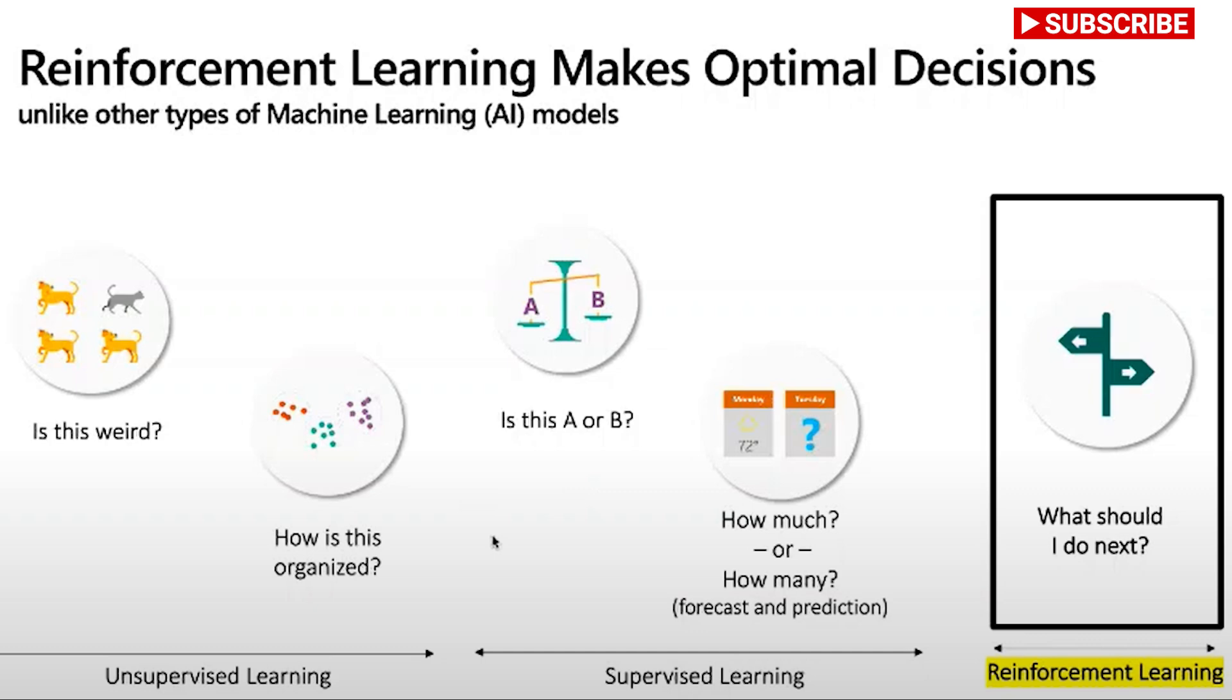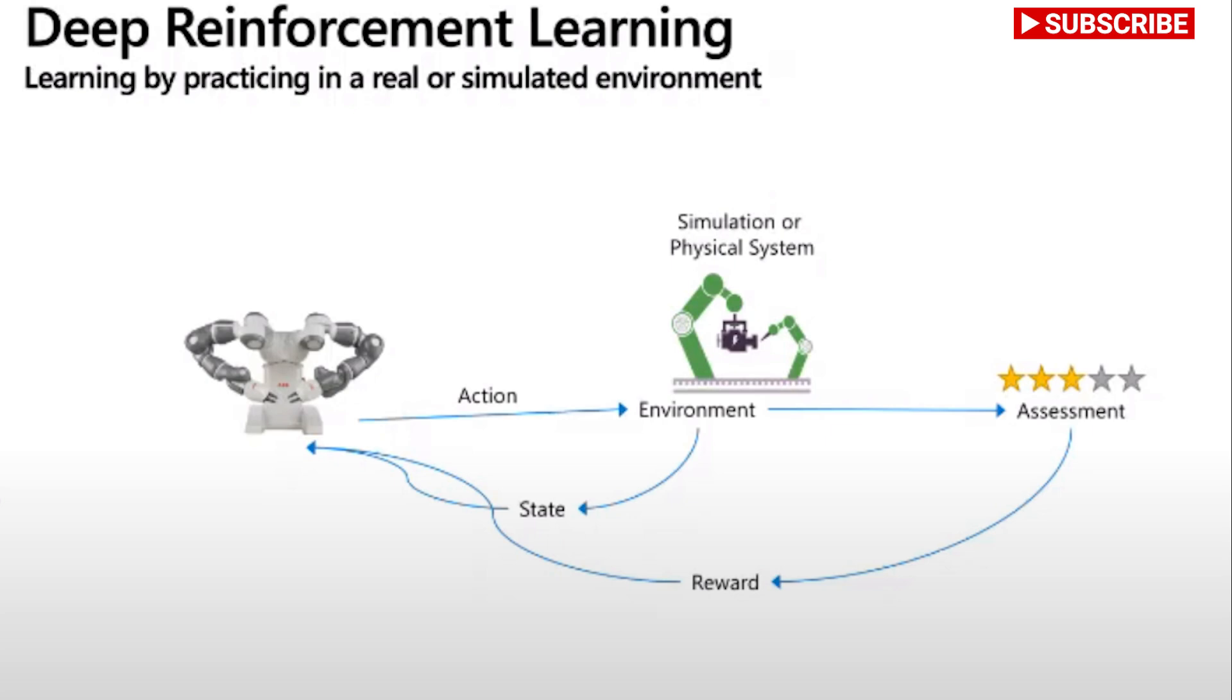What differentiates reinforcement learning is that reinforcement learning basically decides and helps us make the decision of what do I do next? What actions should I actually take based on the information I know?